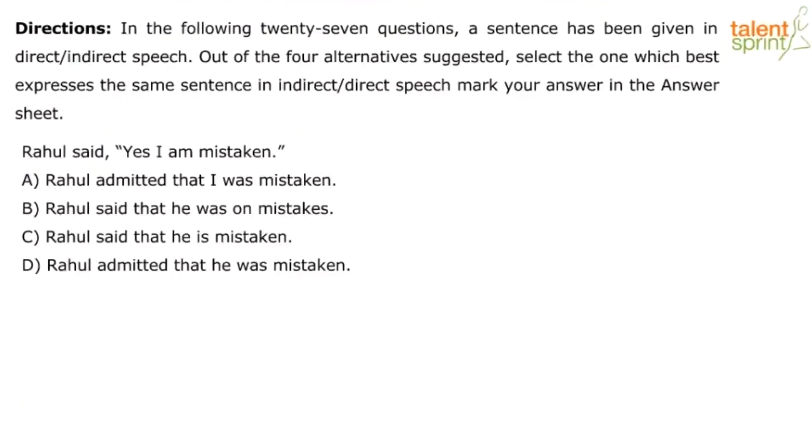Rahul said, 'Yes, I am mistaken.' Quickly paying attention to the tense, we know that I changes to he, and am simple present changes to simple past, which is was. Rahul admitted that I was mistaken - incorrect, he was the one mistaken. Rahul said that he was on mistakes - grammatically incorrect, logically doesn't make sense. Rahul said that he is mistaken - but am is not changed to the right tense, still in present tense. Answer is D: Rahul admitted that I changed to he, am changed to was.